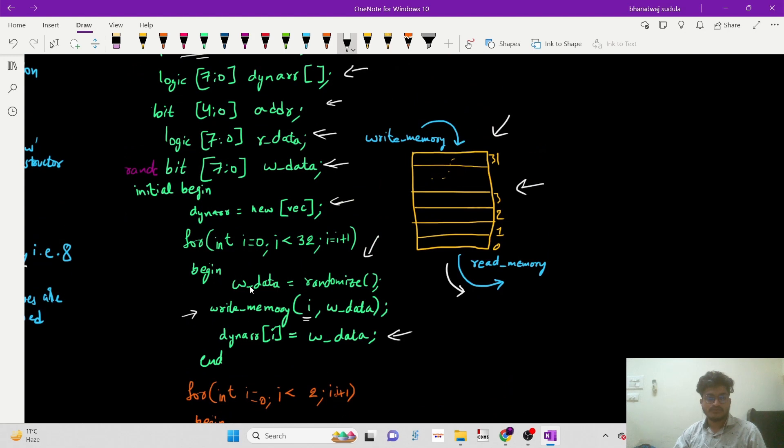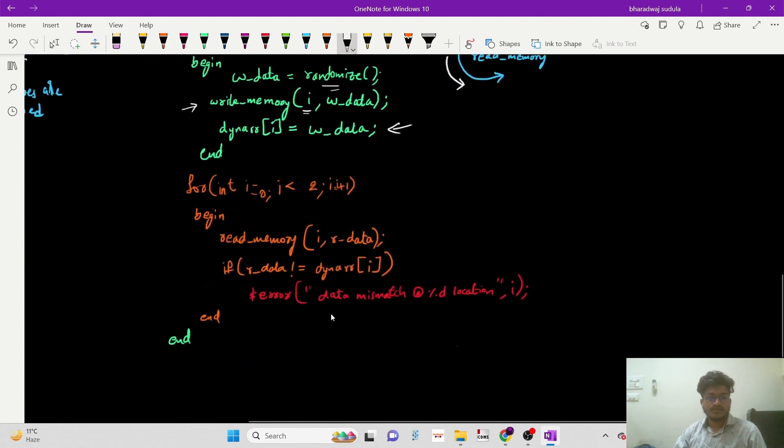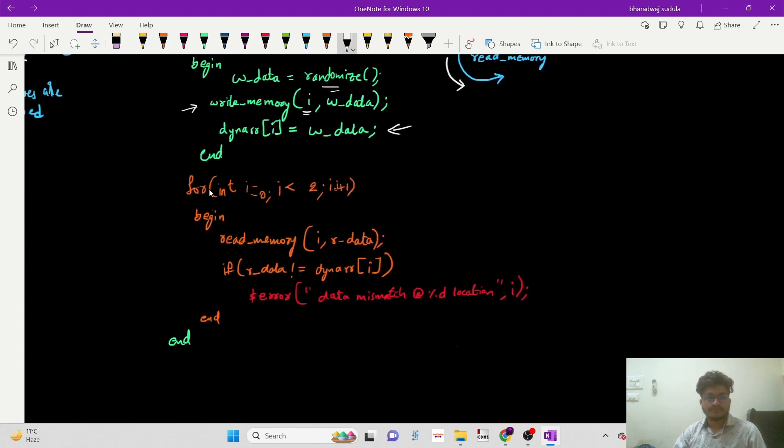loop goes on until each and every location is assigned with some randomized data. Now here we'll be iterating through the entire design - all 32 locations - we'll be reading the data from each location and comparing that